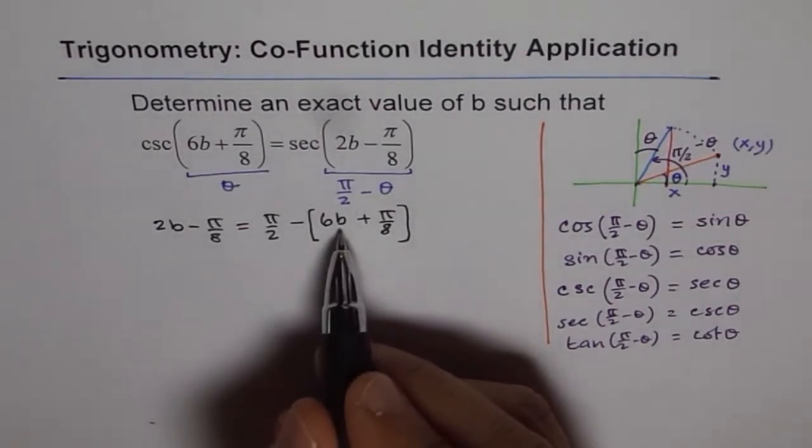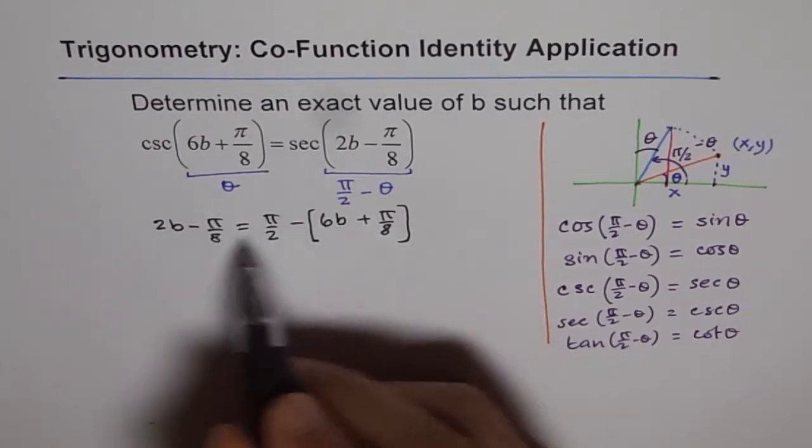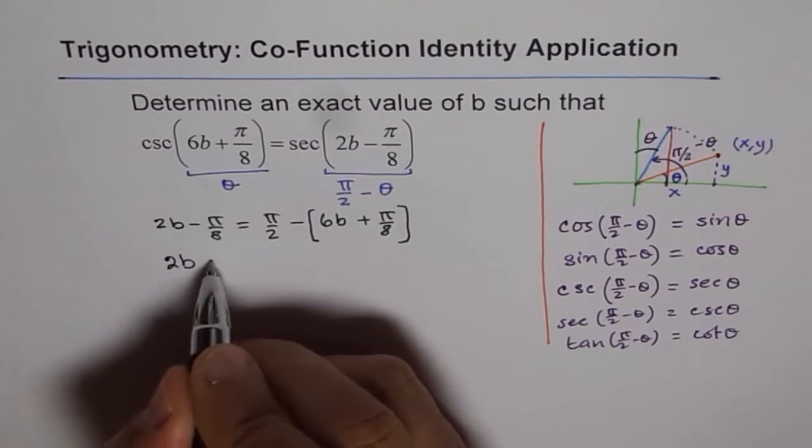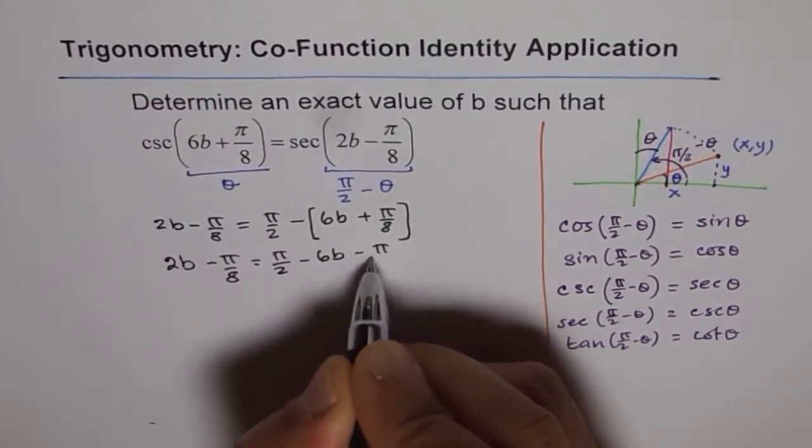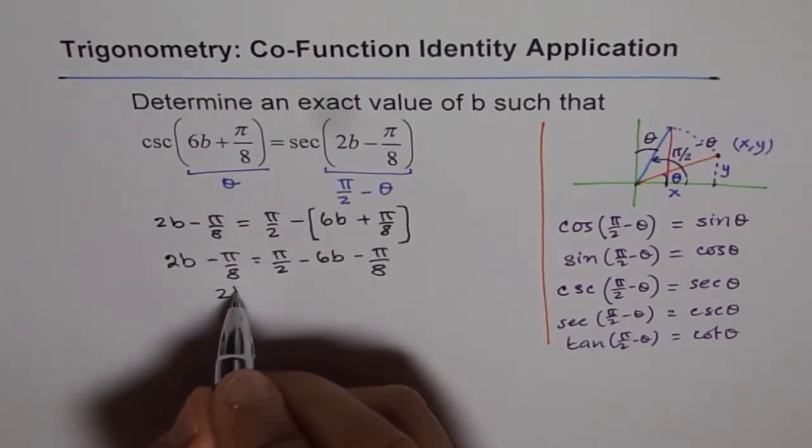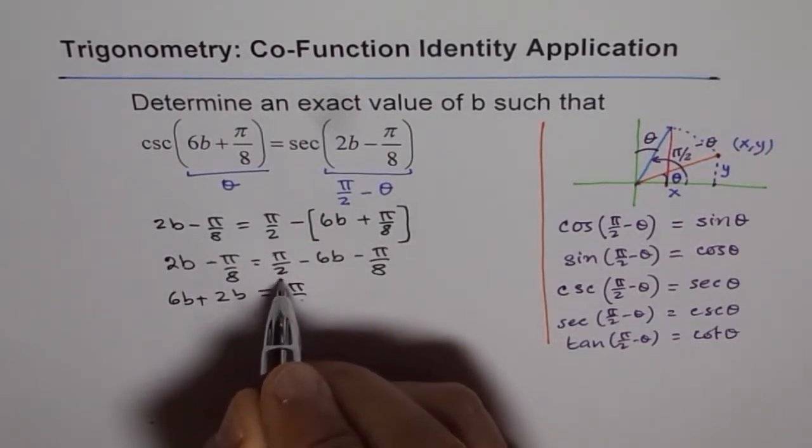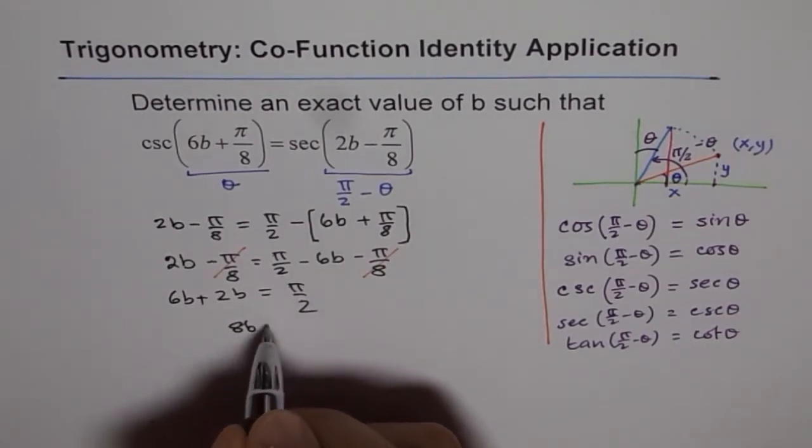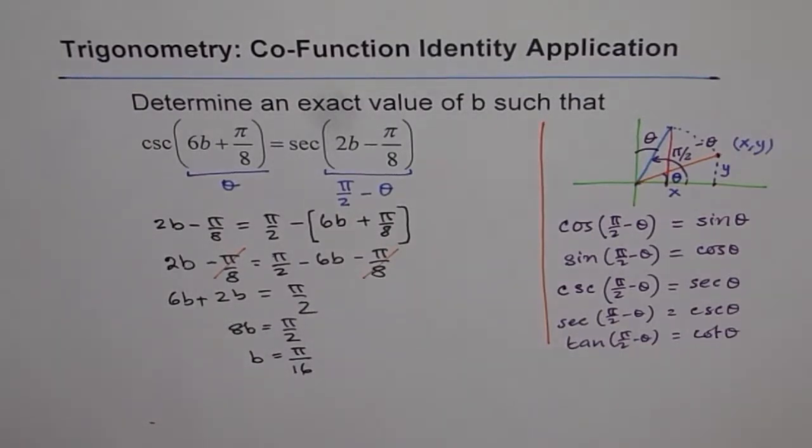We have only one variable. It is a matter of solving this variable. Let us bring the π terms on the right side and the variable on the left. Let me first open this bracket: 2b minus π by 8 equals π by 2 minus 6b minus π by 8. So we get 2b plus 6b equals π by 8 plus π by 2. π by 8 and π by 8 cancels. That means we have 8b equals π by 2, or b equals π by 16. That is the value of b we are looking for.